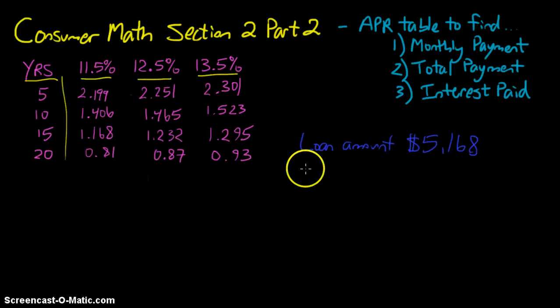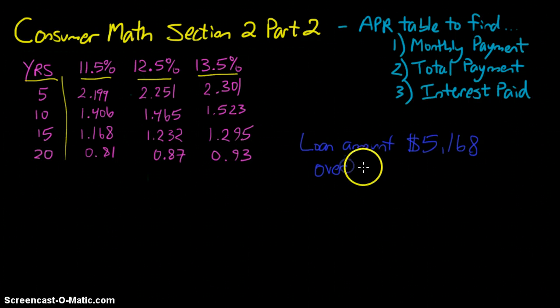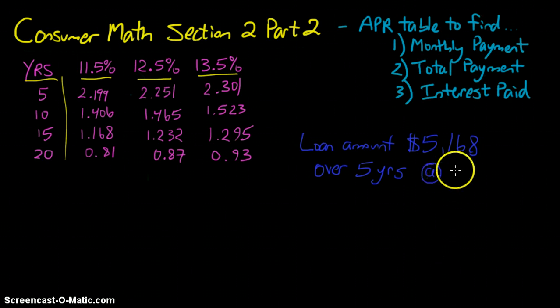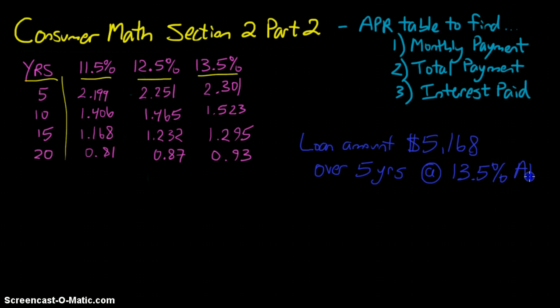And we're doing that over the course of a certain period of time. In this case, it's going to be for five years. And we know then that the APR, the interest rate, is going to be 13.5%. Again, all of that will dictate to us where we're going to look over here at this table. So you have to know those pieces of information.